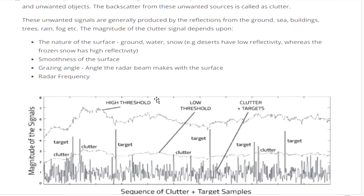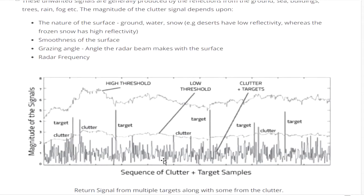These unwanted signals are generally produced by reflections from the ground, sea, buildings, trees, and rain. The magnitude of the clutter signal depends on the nature of the surface — the ground, water, snow — as well as the speed of the surface, the grazing angle, the angle at which the radar beam meets the surface, and the radar frequency.